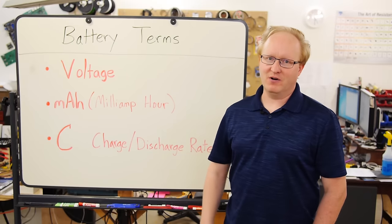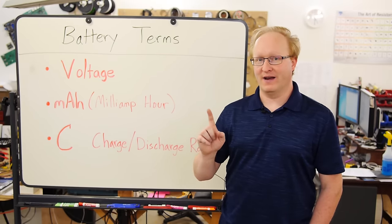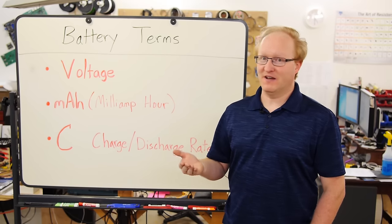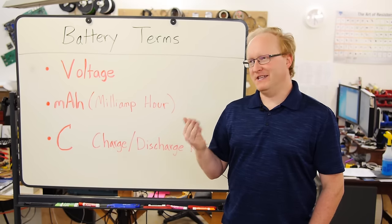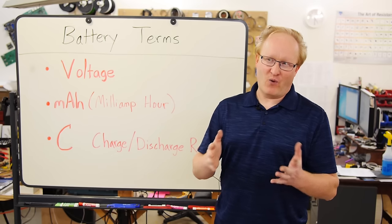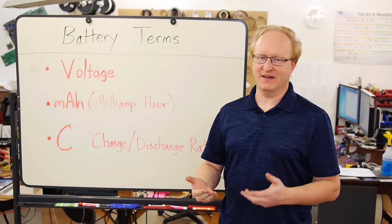MAH means milliamp hour. That is how many milliamps of power the battery can provide for one hour. So if it's a 1,000 milliamp hour battery, you can provide 1,000 milliamps for one hour. But typically, you can't discharge it that quickly. You might have 100 milliamps, in which case you would get 10 hours of battery life out of it.